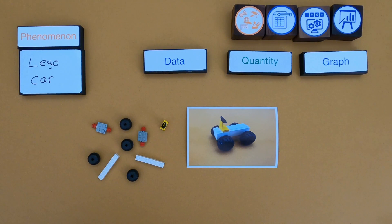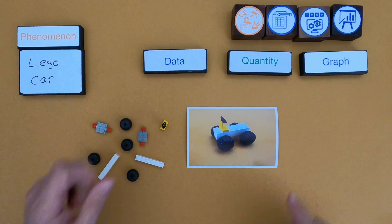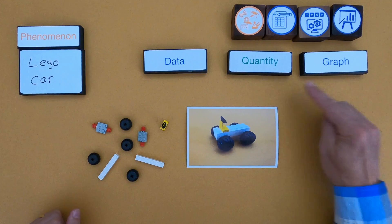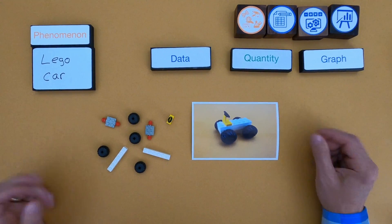Okay, so those are all the parts of the Lego car. What I would encourage you to do now is pause the video. First create a data table. And then make sure that it includes quantities. And then create a graph. Then unpause the video, come back, and let's see how our mathematical thinking compares.